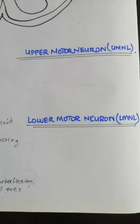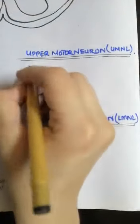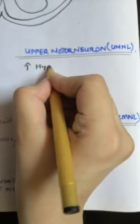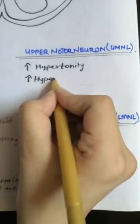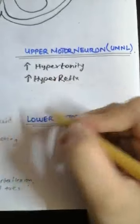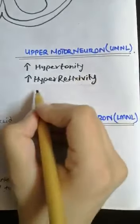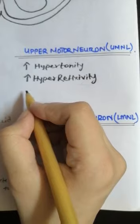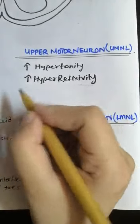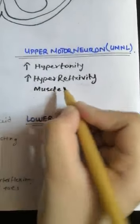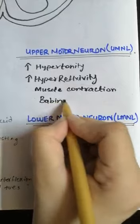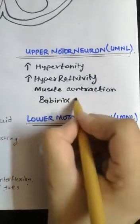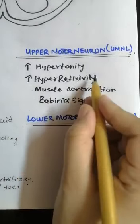Now, regarding lesions of the upper and lower motor neurons: if there is a lesion in the upper motor neuron or descending tract, everything will increase. There will be an increase in muscle tone — hypertonicity — leading to spastic paralysis. There is also an increase in reflexes, called hyperreflexivity, and an increase in muscle contraction. There is also a presence of a positive Babinski sign — that is, dorsiflexion of the big toe and extension of all the toes — which is abnormal in upper motor neuron lesions.